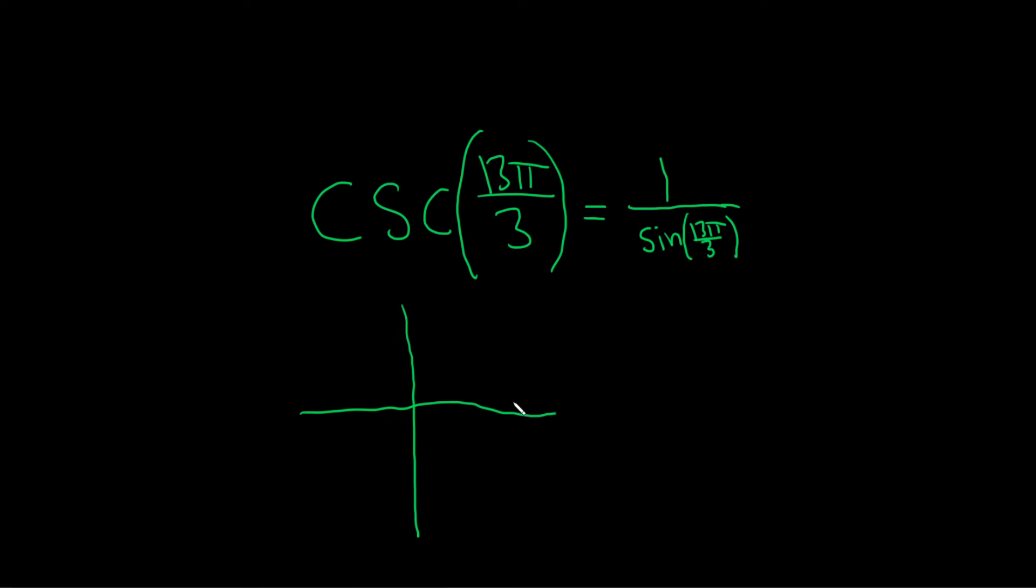So here's the unit circle, I'm going to switch colors here. And this is 0, this is π over 2, this is π, and this is 3π over 2. And this is also 2π.